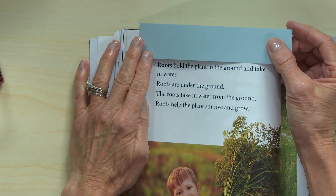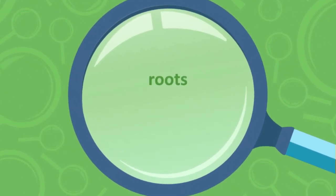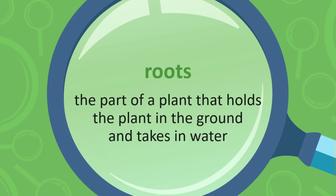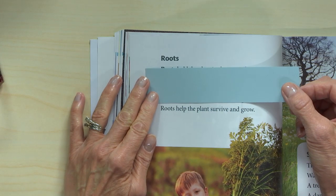Roots hold the plant in the ground and take in water. Our new vocabulary word is 'roots.' The roots are the part of a plant that holds the plant in the ground and takes in water. Roots are under the ground and take in water from the ground to help the plant survive and grow. God designed the roots to get water from the ground — water that comes from rain, snow, sleet, and hail soaking into the ground. Remember that one of the plant's needs is space, and plant roots need space to take in the water the plant needs to survive and grow.